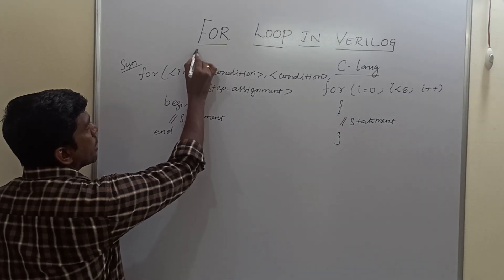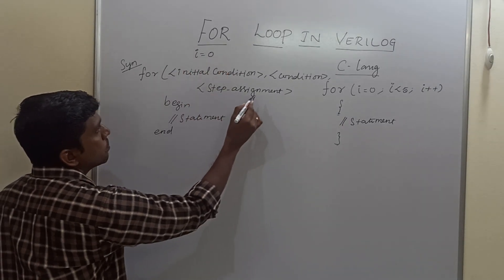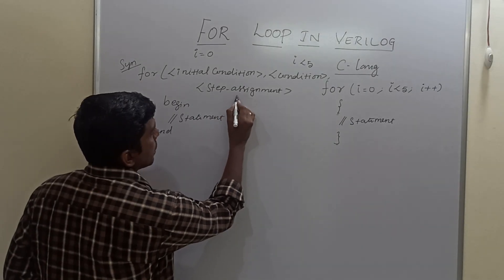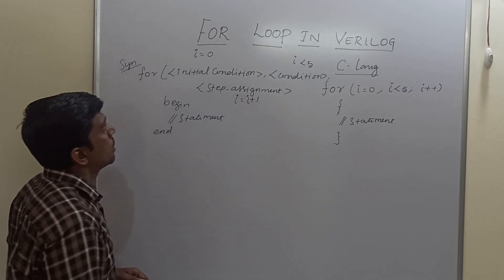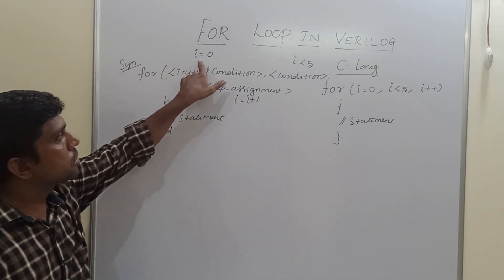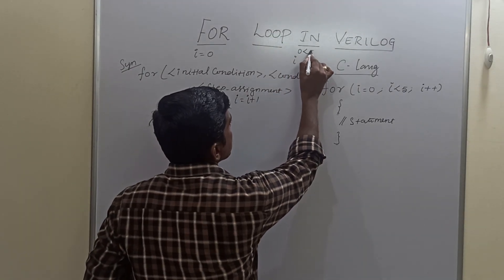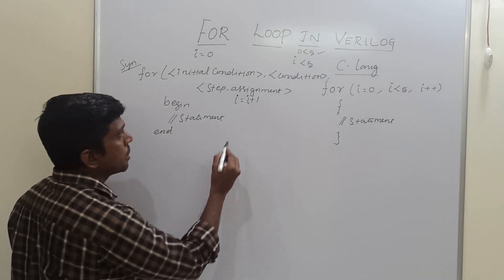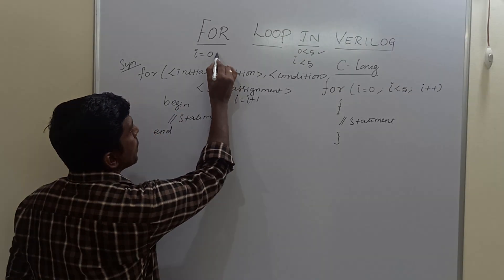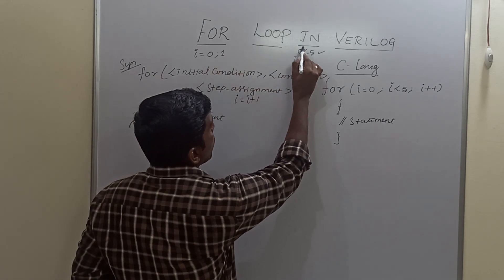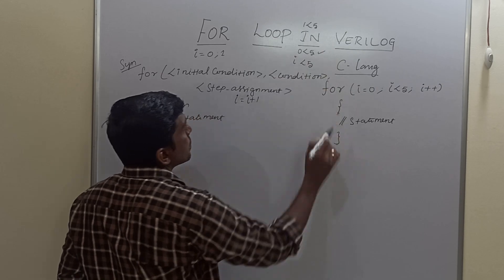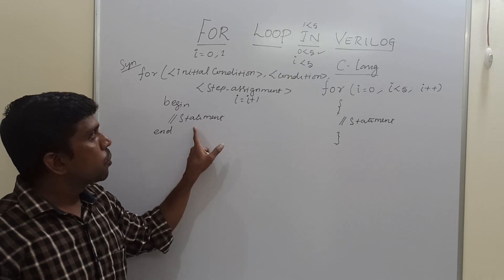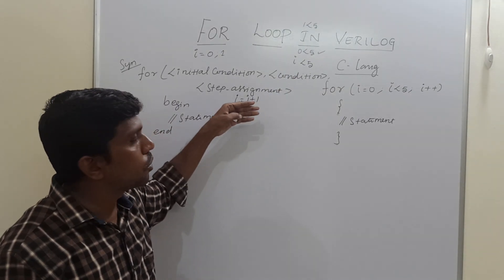Let me assign the variable. The initial condition sets i equal to 0, the condition is i less than 5, and the step assignment is i = i + 1. So in this for loop, initially i equals 0. Since 0 is less than 5, the condition is true, so the statement executes. Then i = i + 1, so i becomes 1. Since 1 is less than 5, the condition is still true and the statement executes again. Once the condition is false, the loop ends.